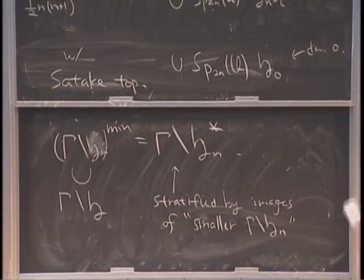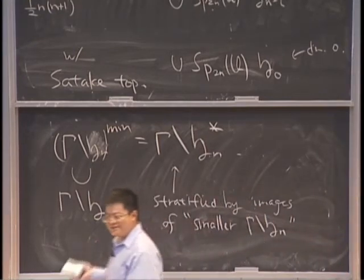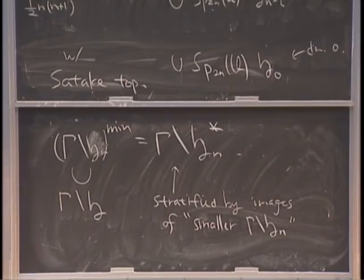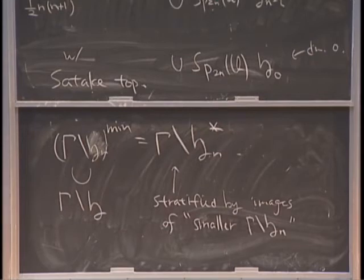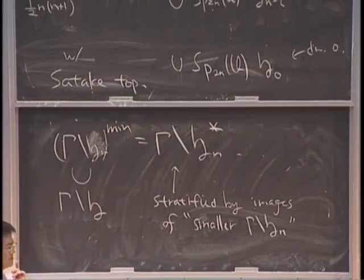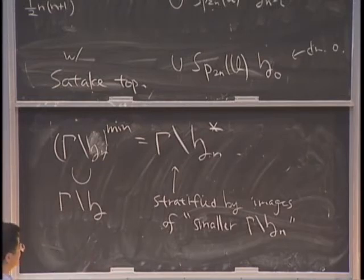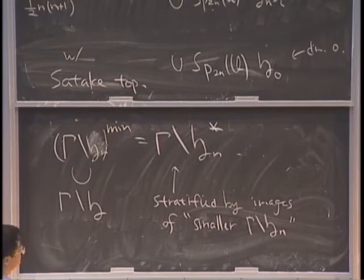Baily-Borel compactifications are simple-minded in some sense: as a set, you just put all the smaller Hermitian varieties on the boundary. Of course, you must be careful about how you attach them, and you must keep in mind that you really have orbits, not just one copy for each stratum. There are special cases where things are simple — for example, if gamma is Sp_{2n}(Z), you actually have one copy of each stratum.